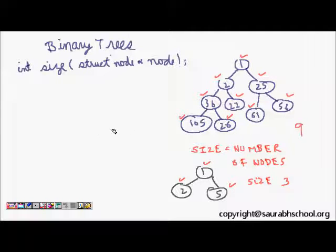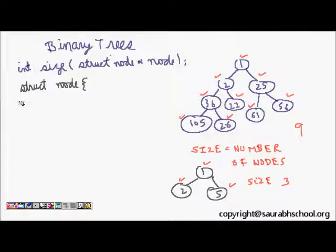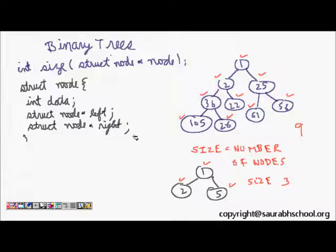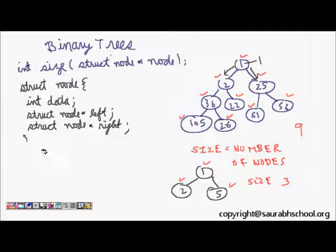Now, how do we code this for a binary tree? The structure of the node is: struct node has an int data, a struct node* left pointer, and a struct node* right pointer. This represents the data, left child, and right child of each node.